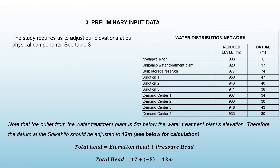The project study area requires us to adjust our elevation at each physical component, as you can see on table three. You must also know that the outlet from the water treatment plant is five meters below the water treatment plant's elevation. Therefore, the elevation at Shikahilo water treatment plant is to be adjusted to 12 meters, as you can see on our calculations below.